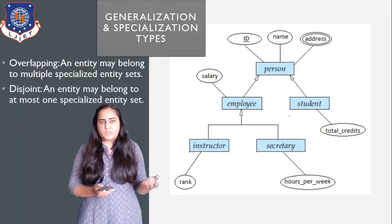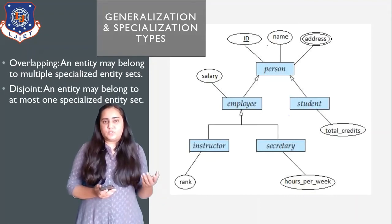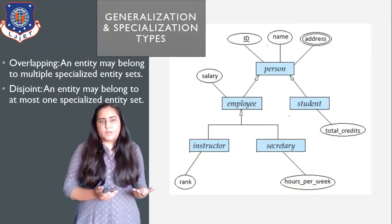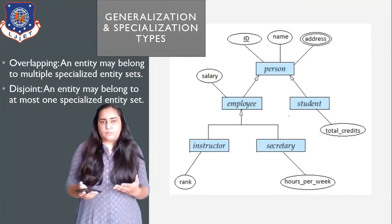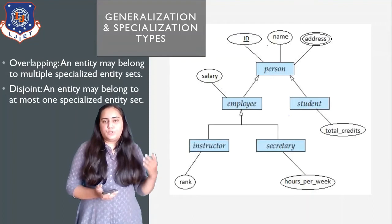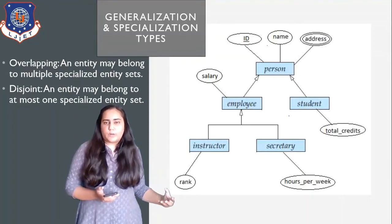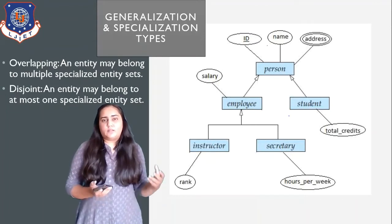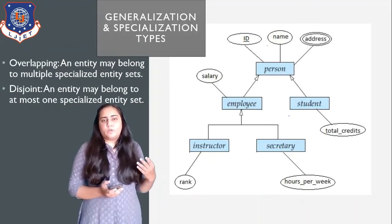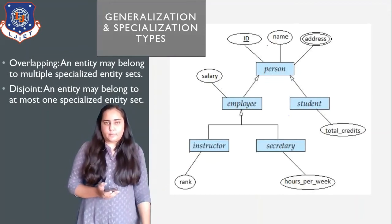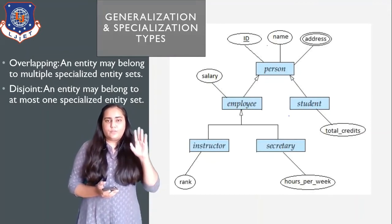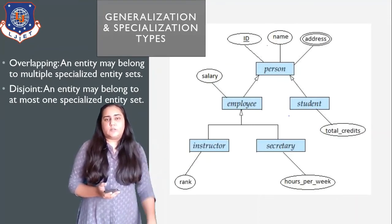The next type is a disjoint specialization, where one entity may belong to at most one specialized entity set. For example, a person who is an employee cannot be both an instructor and a secretary at the same time, so they are placed in either the instructor or secretary entity, not both. To show this in the diagram, we use one single hollow arrow instead of two separate ones, and from that one arrow we create the specializations.